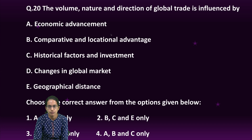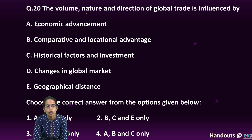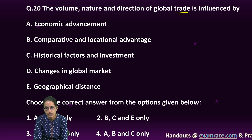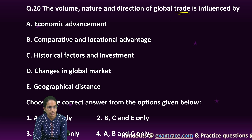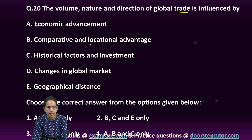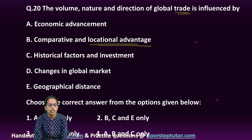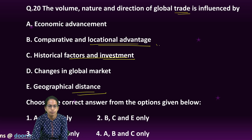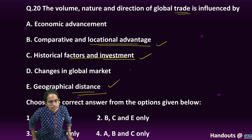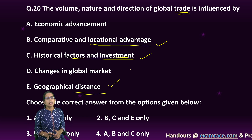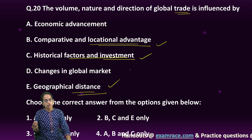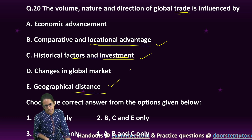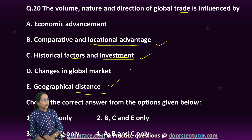The last question we discuss today: the volume, nature, and direction of global trade is influenced by various factors. It is influenced by locational advantage, historical factors, investments, and geographical distances. So options B, C, and E are correct here, focusing on the volume, nature, and direction of global trade.